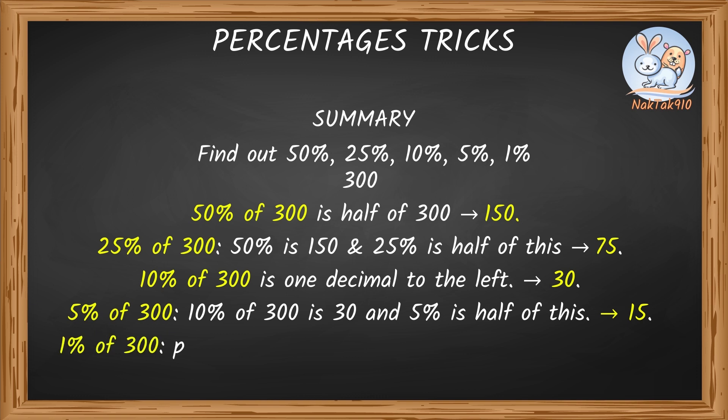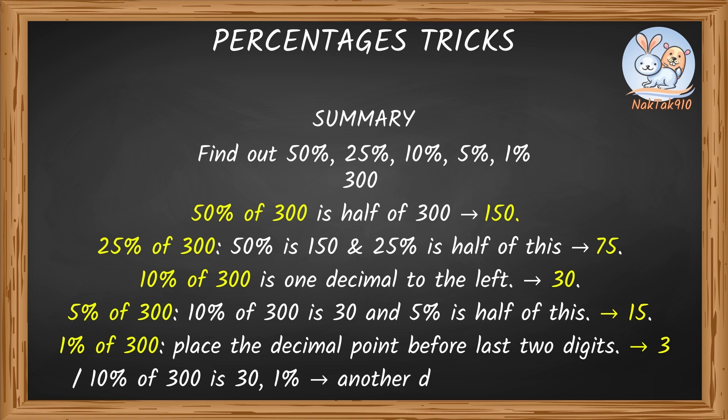1% of 300, just place the decimal point before the last two digits. That's 3. Or another way is 10% of 300 is 30. So, 1% would be another decimal to the left. That's 3.